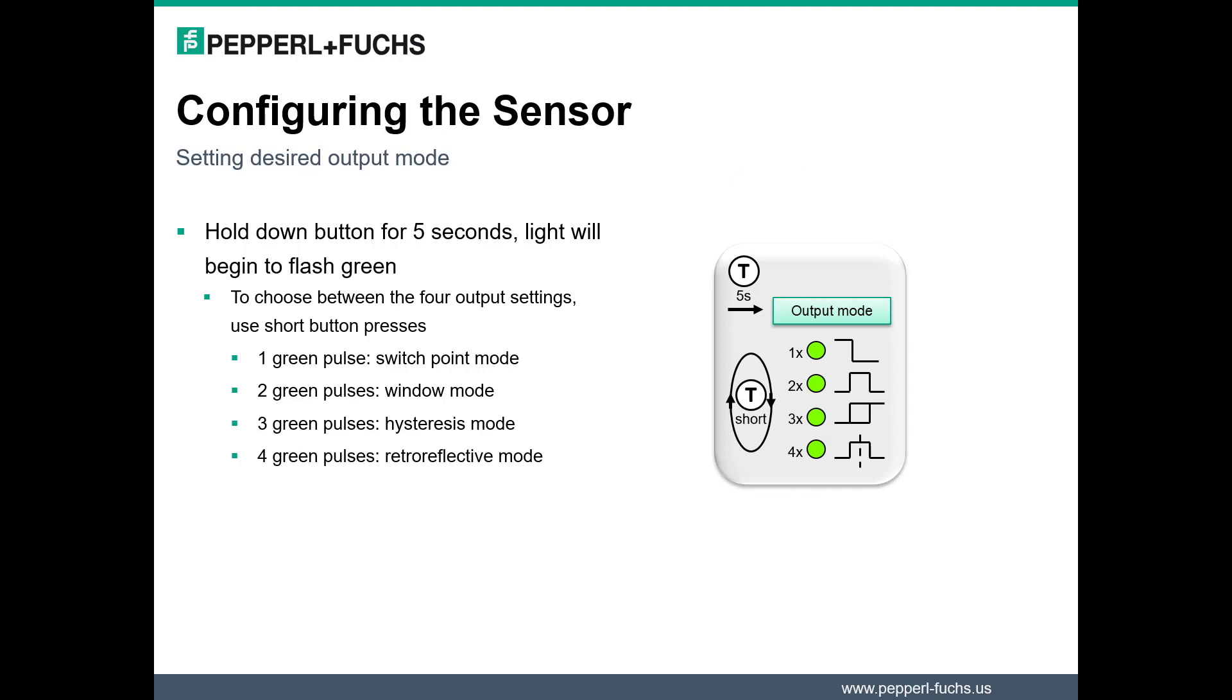To configure the sensor for its output mode, we will first hold down the push button for 5 seconds until you see the light begin to flash green. Then, to cycle between the four output settings we discussed earlier, use short button presses. One pulse indicates switch point, two pulses indicates window, three for hysteresis, and four for retroreflective.